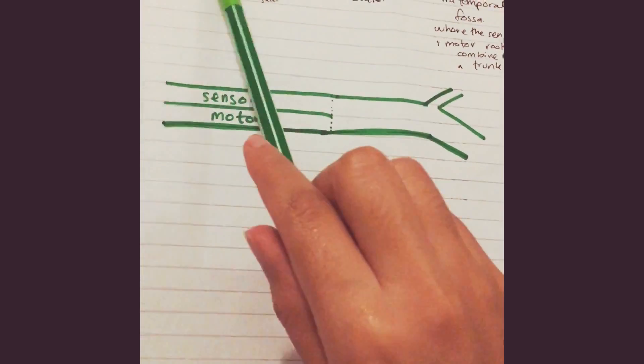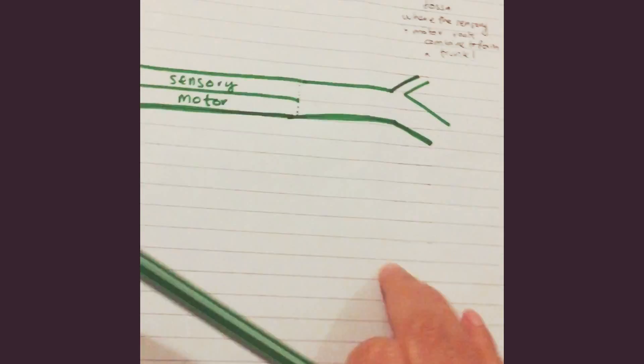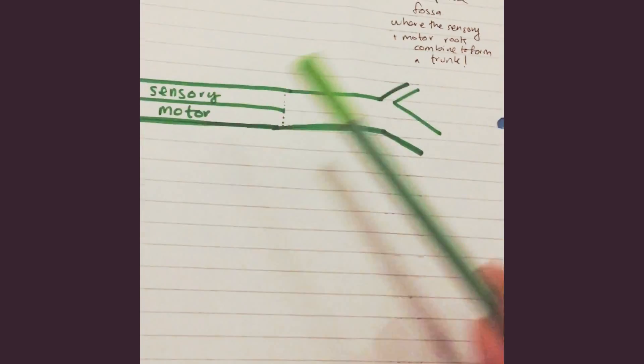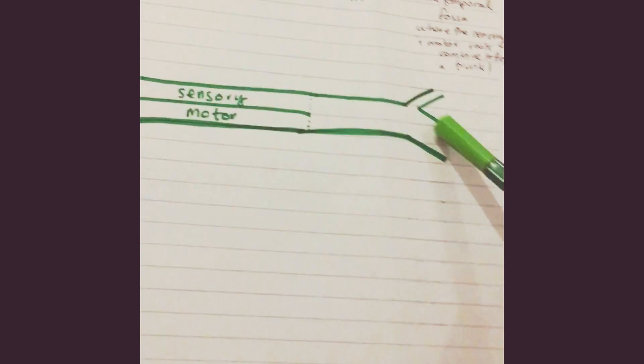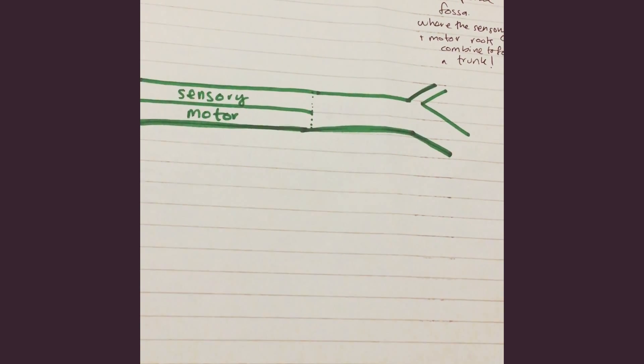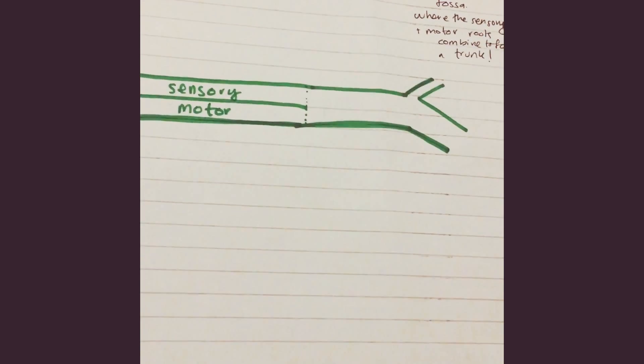We're talking about the mandibular nerve, which has sensory and motor parts combined to form a trunk. It has a small anterior end and a large posterior end, and now we're going to cover the branches.